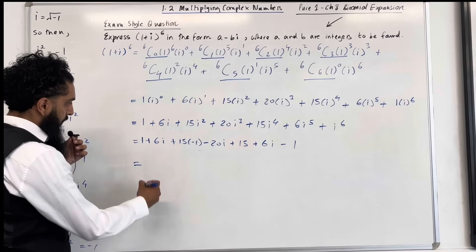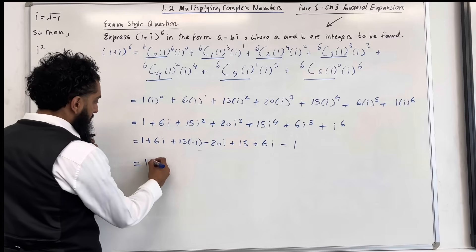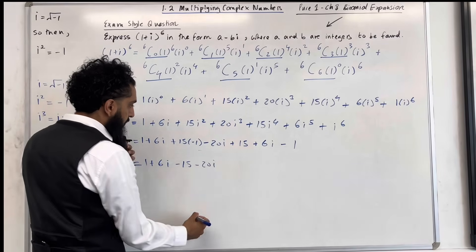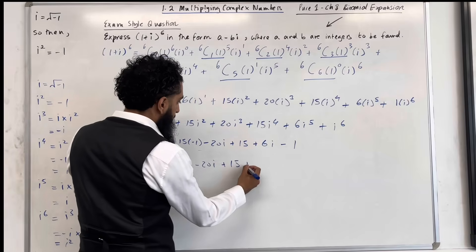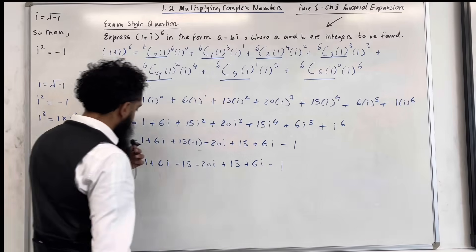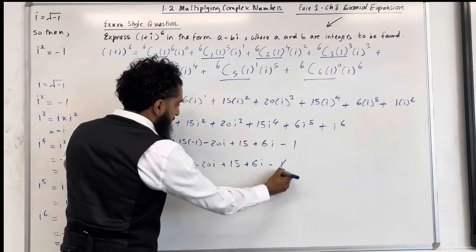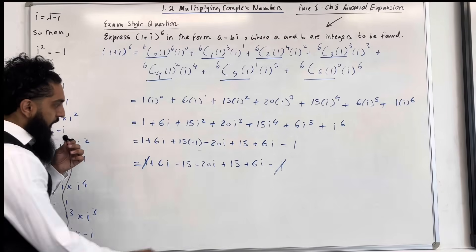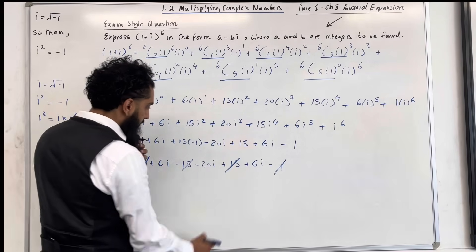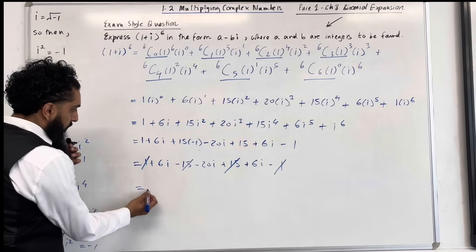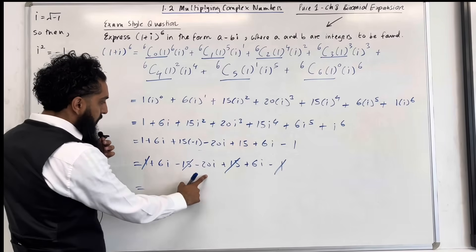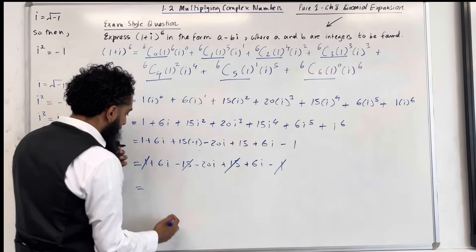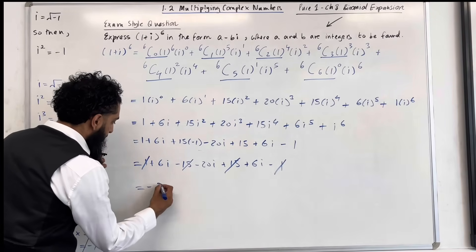So we're going to simplify this. I've got 1 plus 6i minus 15 minus 20i plus 15 plus 6i minus 1. So 1 and minus 1 cancel, and minus 15 plus 15 also cancel. We've got 6i minus 20i, which is minus 14i. Hence, minus 14i plus 6i is minus 8i.